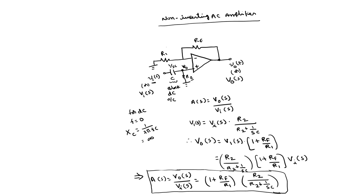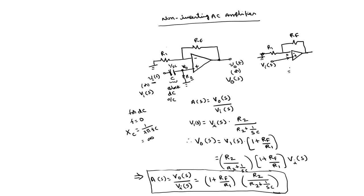To get the DC voltage gain, we short-circuit the capacitance. When shorted, Vi is directly connected and there is no current through R2, so the voltage drop across R2 is 0 and it can be neglected. This is exactly the same as the non-inverting DC amplifier, whose gain V0(S)/Vi(S) — independent of S — equals (R1 + Rf)/R1.